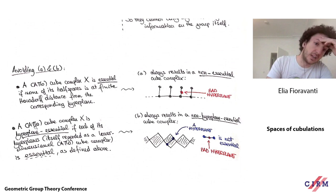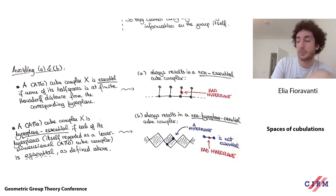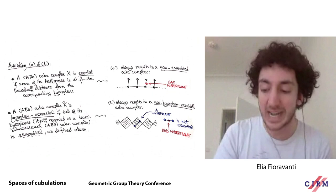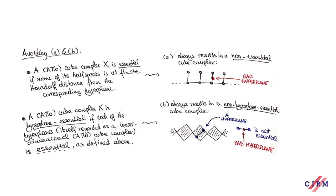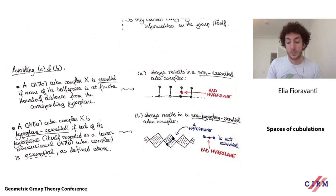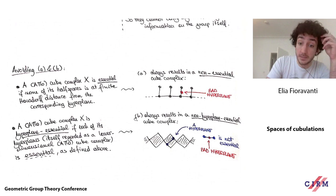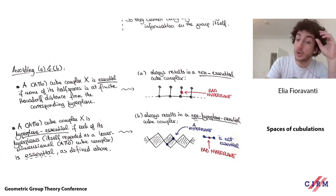We say a CAT(0) cube complex is hyperplane-essential if each hyperplane is itself an essential CAT(0) cube complex. It's important to note that hyperplanes of CAT(0) cube complexes themselves have a CAT(0) cube complex structure: you intersect all cubes of the complex with any given hyperplane, decomposing the hyperplane into lower-dimensional cubes. So we can ask that these hyperplanes with induced cubical structures are essential. Procedure B always results in a cube complex that's not hyperplane-essential — it preserves essentiality of the whole complex but kills essentiality of the hyperplanes.